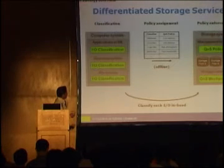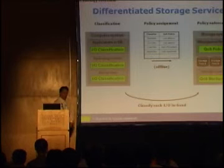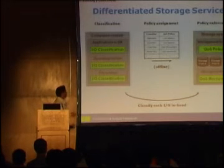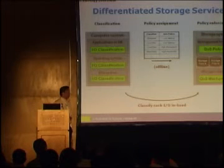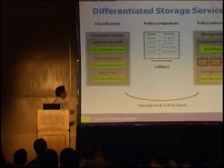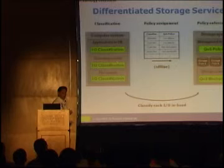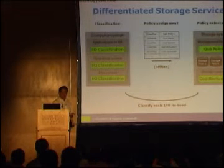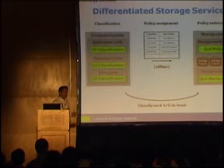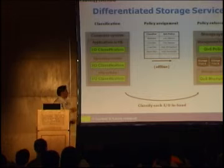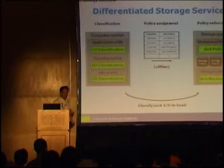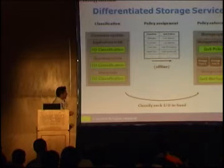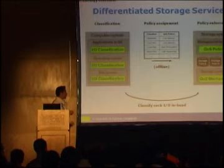Here are some example classifiers: metadata requests get low-latency service; boot files get low latency so your computer boots faster; small files on a file server get high throughput; media files get high bandwidth. All these classifiers are determined on the host side. As far as policies, once you've attached a storage system, it will have certain policies available — maybe platinum, gold, and silver service levels, or priority levels. We're not trying to standardize those yet; we assume they'll be made available and well-known. A storage system vendor might collaborate with a computer system vendor to provide policies optimized for a specific workload like a database.